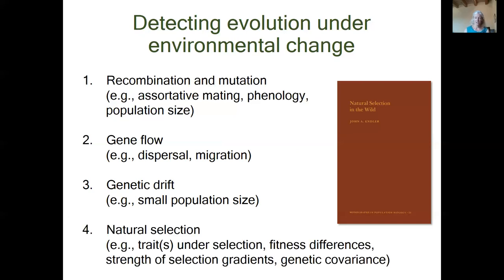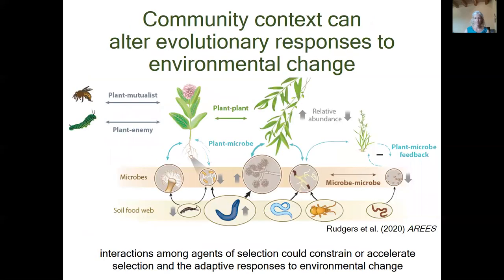And lastly, the majority of existing studies — really the bulk of the published literature — addresses how environmental change alters the process of natural selection. Environmental change can influence which traits are under the strongest selection, can magnify or reduce fitness differences among genotypes, and alter the strength of selection gradients on species traits. Additionally, natural selection could alter genetic covariances among traits when multiple traits are involved in responding to change.